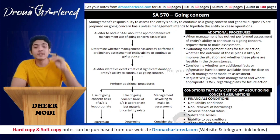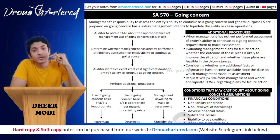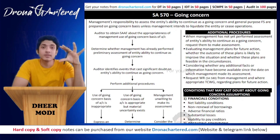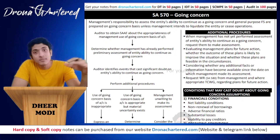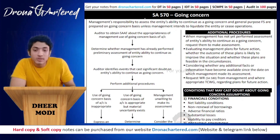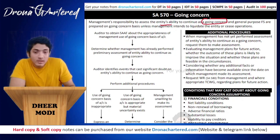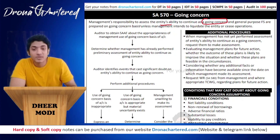So let's start. SA 570 is going concern. Going concern is when our books of accounts are prepared — it is made on the assumption that our business will continue in existence for the foreseeable future, that is it will act as a going concern. So it is the management's responsibility to assess the entity's ability to continue as a going concern. The general purpose financial statements are prepared on a going concern basis, unless the management intends to liquidate the entity or cease operations.